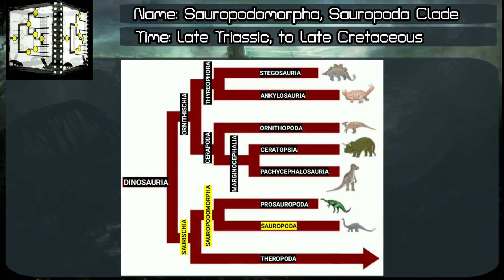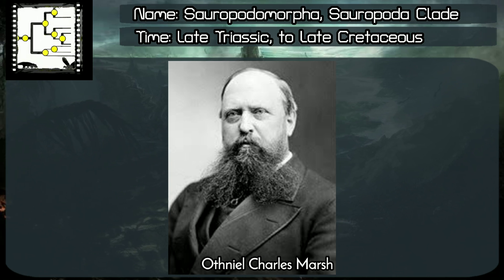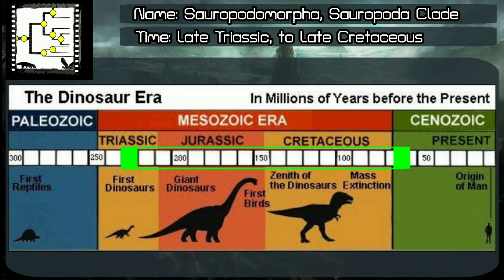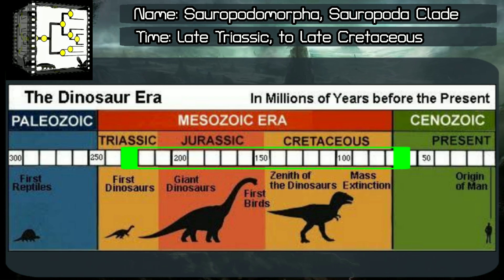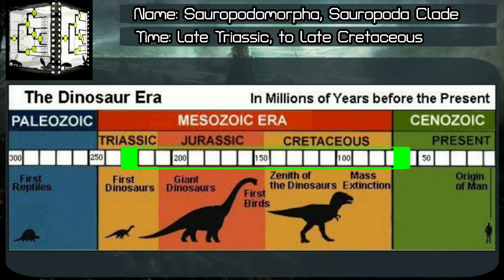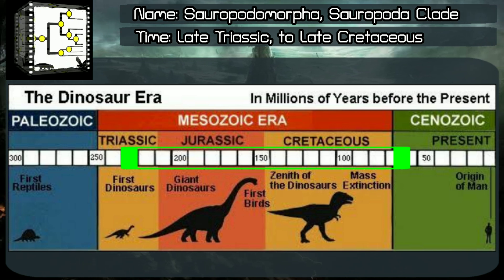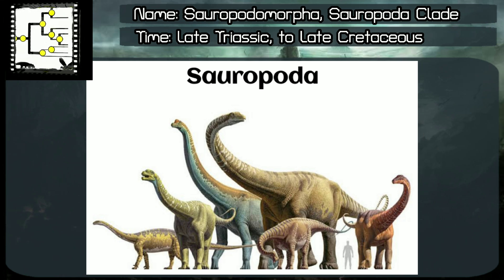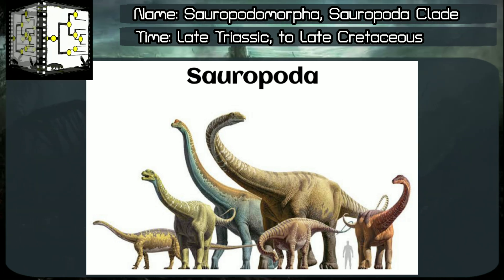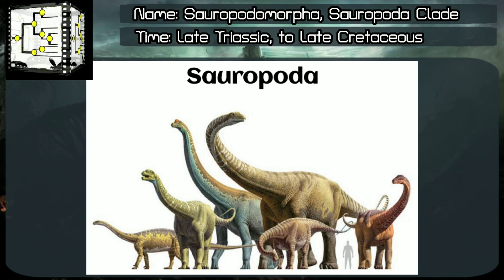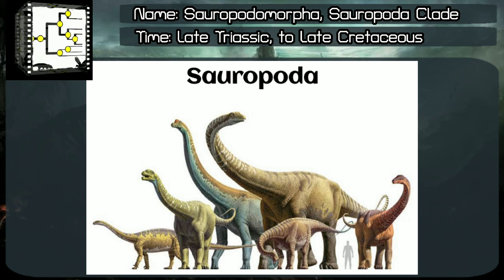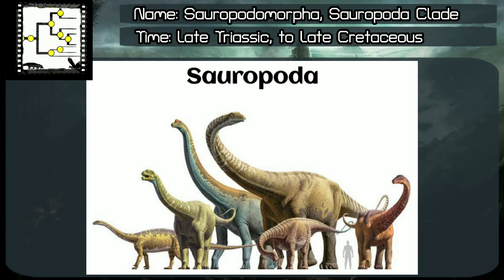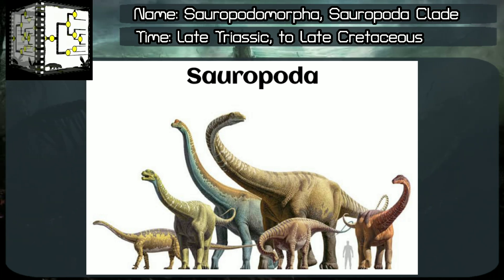Sauropoda clade, classified by Othniel Charles Marsh, year 1878. Time range: Phanerozoic Aeon, Mesozoic Era, late Triassic to late Cretaceous periods, something around 230 to 66 million years ago. From Greek, Sauropoda means lizard foot. Sauropoda is a clade composed by the sauropods. They are famous for their gargantuan proportions, very long necks, heavy chests, small heads, long tails, trunk-like legs, and by being herbivorous.